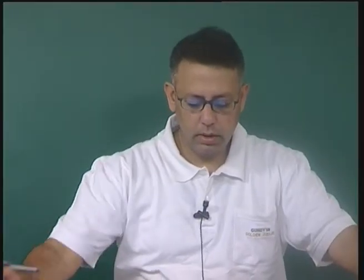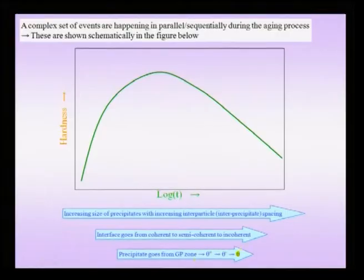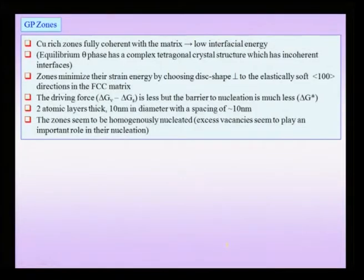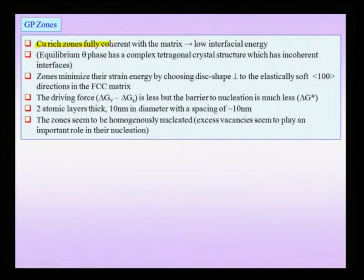We need to understand why we do not directly get the equilibrium precipitate theta, but go through a complex sequence of precipitation involving intermediate metastable phases like theta double prime and theta prime. Before that we have the GP zones, which are copper-rich zones that technically do not come under the class of precipitates, but are more like enrichment regions within the matrix with a low interfacial energy.